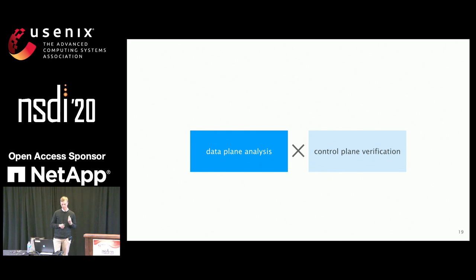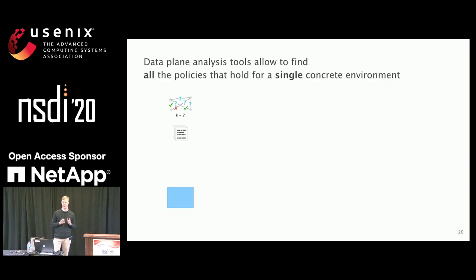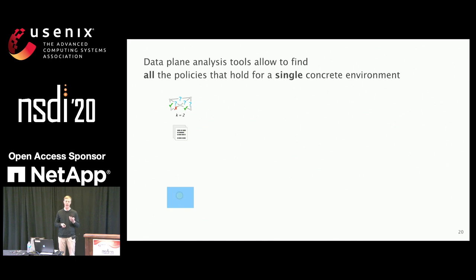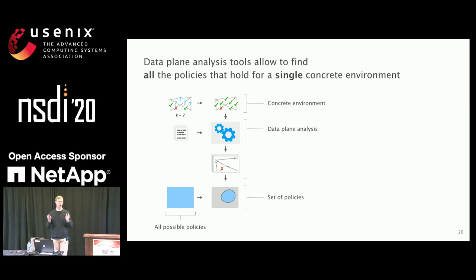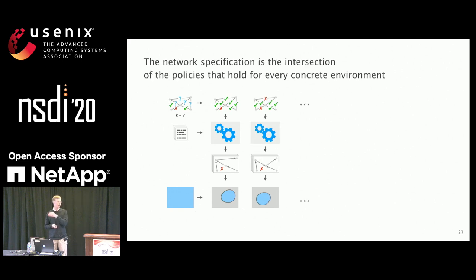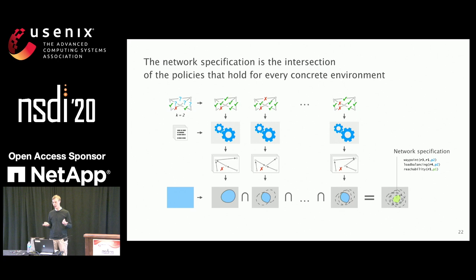Finding the specification for the entire failure model is difficult, but finding the specification for one single concrete environment is not that hard and can be done by data plane analysis. From the failure model, we take one concrete environment. Together with the configuration, we feed this into a data plane analyzer, which computes the forwarding state. From the forwarding state, we can extract all the policies that hold for this concrete environment. We repeat this for every concrete environment within the failure model, intersect those sets, and end up with the specification.